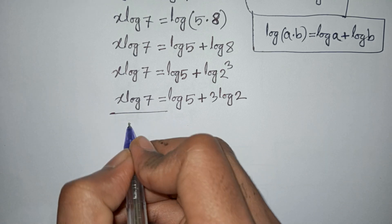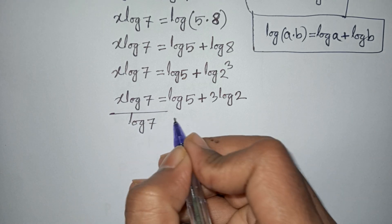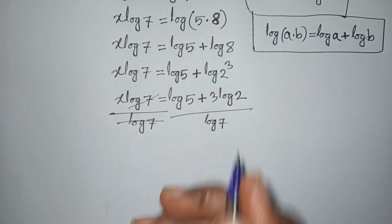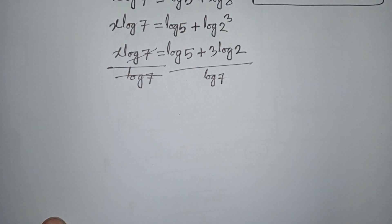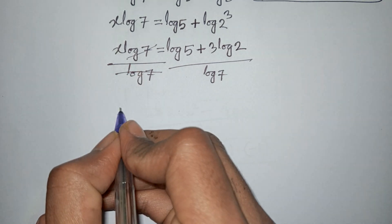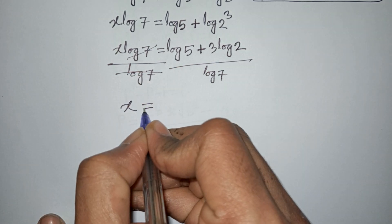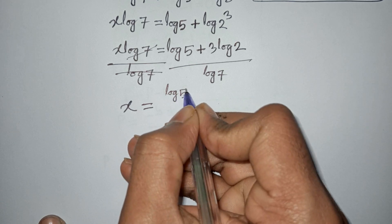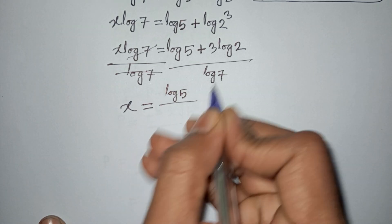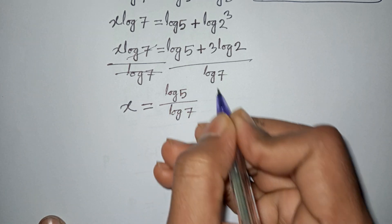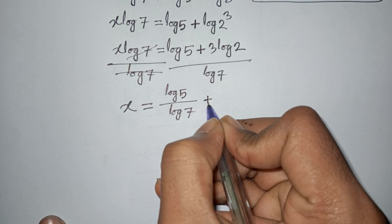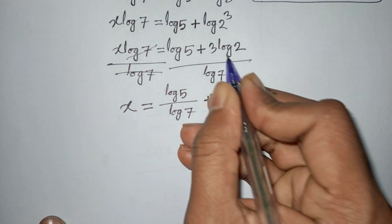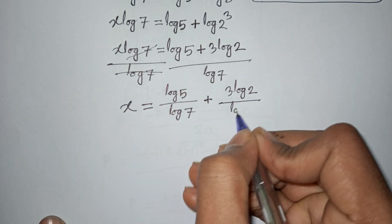We need to find x, so divide by log 7 on both sides. This log 7 and this log 7 will be cancelled. So x will be equal to log 5 over log 7 plus 3 log 2 over log 7.